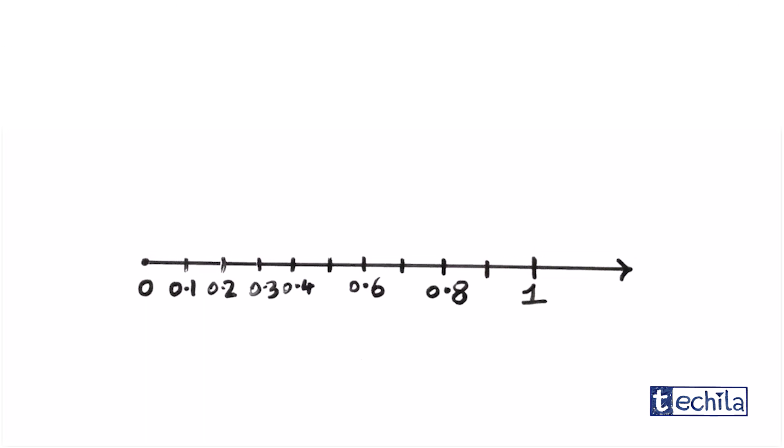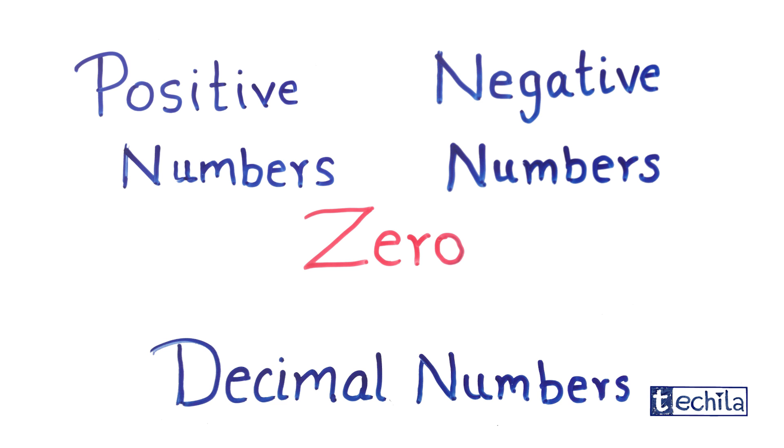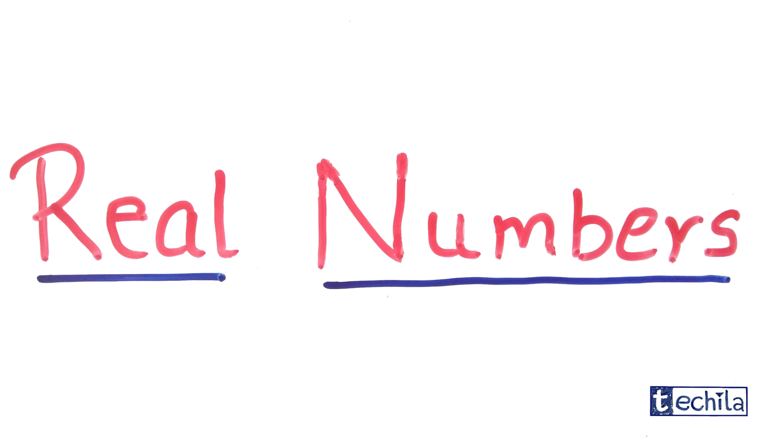Further, with the invention of decimal number system, we found that there also exist numbers between two numbers. This combination of positive numbers, negative numbers and 0 including the decimal numbers is what we know as real numbers.